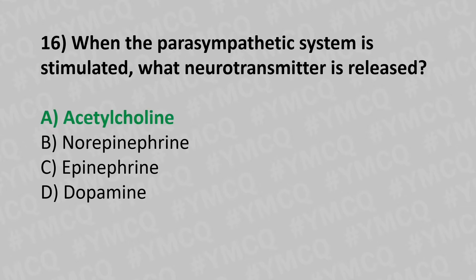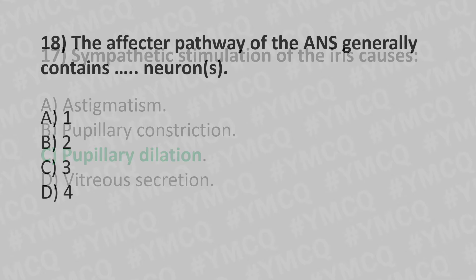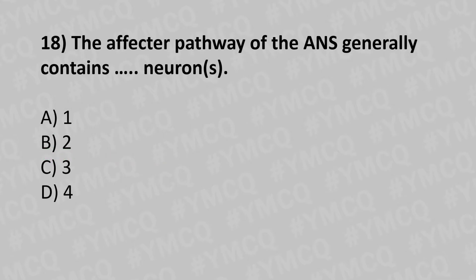Moving to our seventeenth question. Sympathetic stimulation of the iris causes: Option A: astigmatism. Option B: pupillary constriction. Option C: pupillary dilation. Option D: vitreous secretion. And the answer is option C: pupillary dilation.